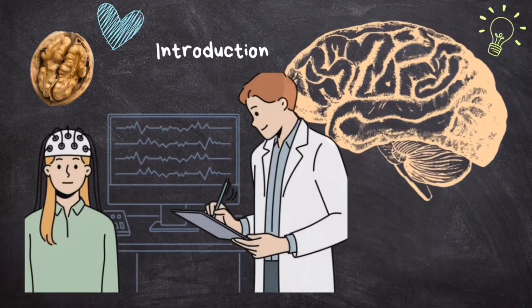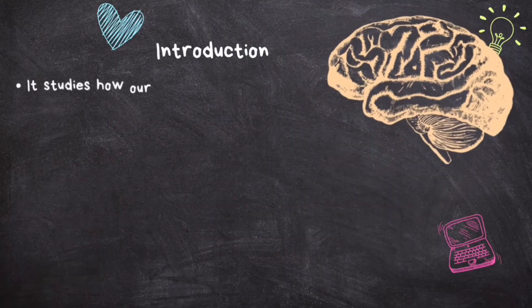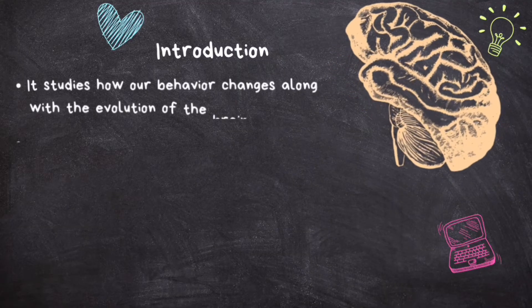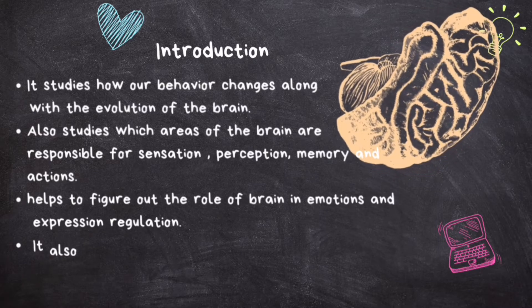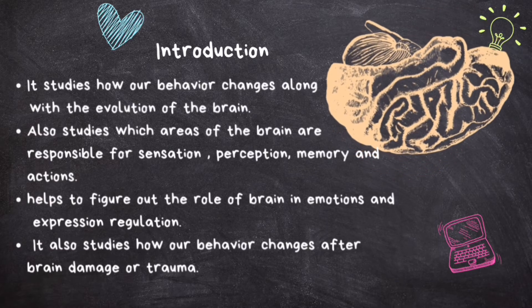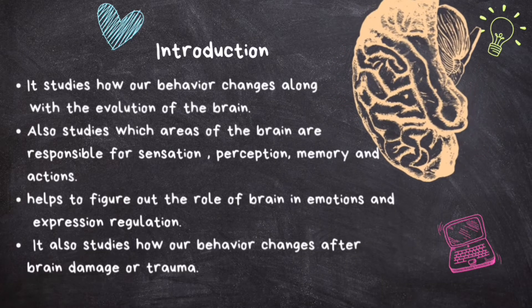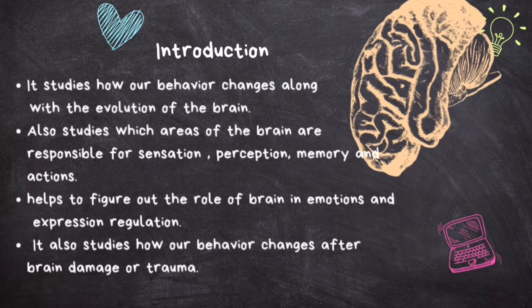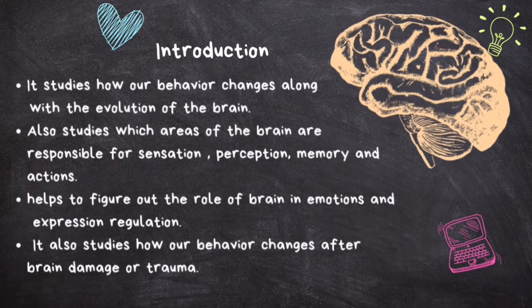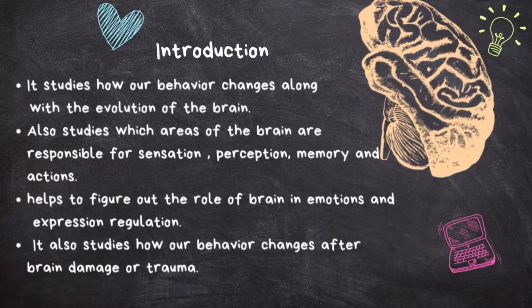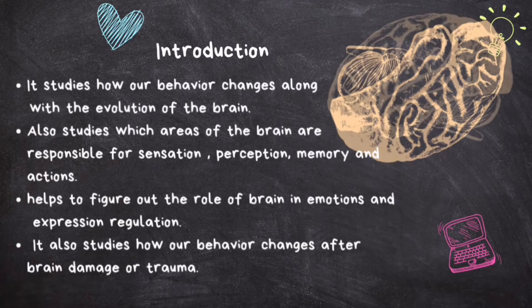Now here comes biopsychology — it's a close cousin of neuroscience. It uses neuroscience knowledge to understand human and animal behavior. You might also know it as psychobiology or behavioral neuroscience. It studies how our behavior changes along with the evolution of the brain, which areas of the brain are responsible for sensation, perception, memory, and actions, and the role of the brain in emotions and expression regulation.